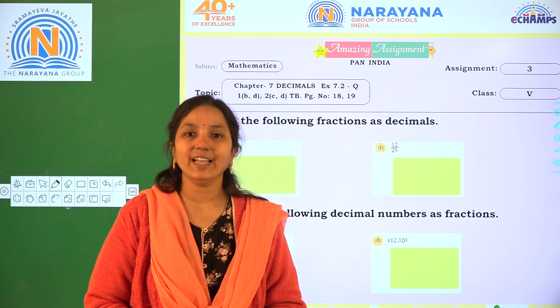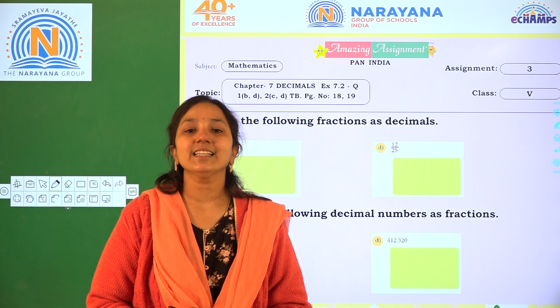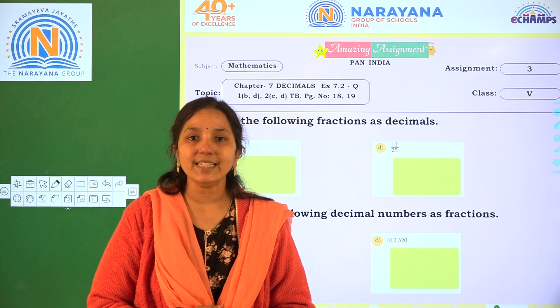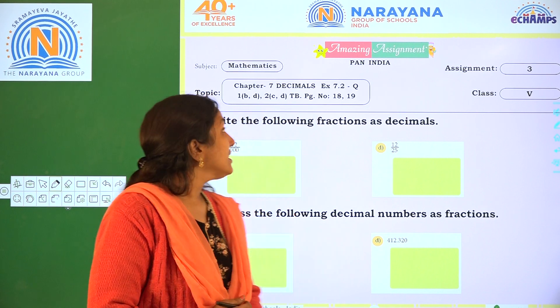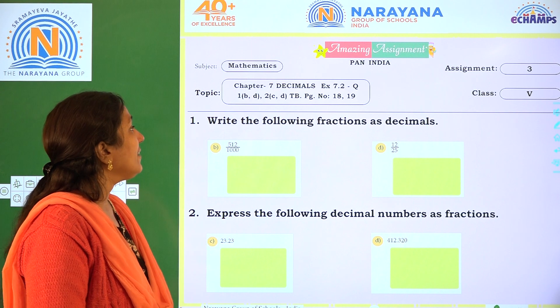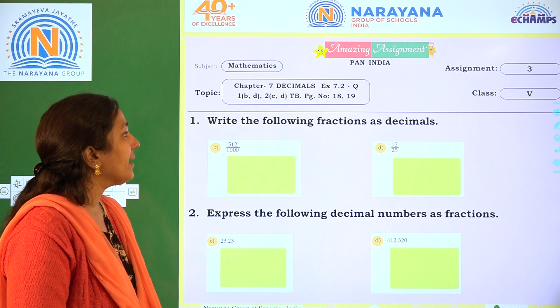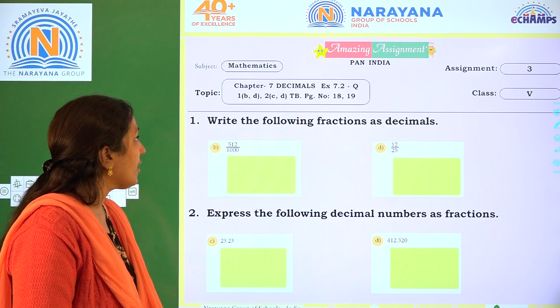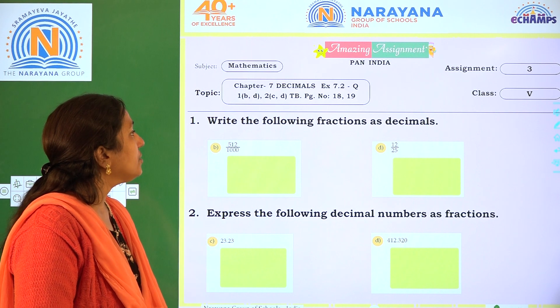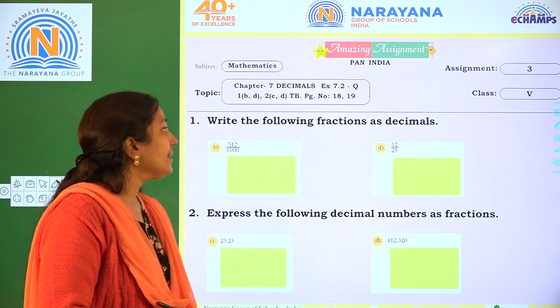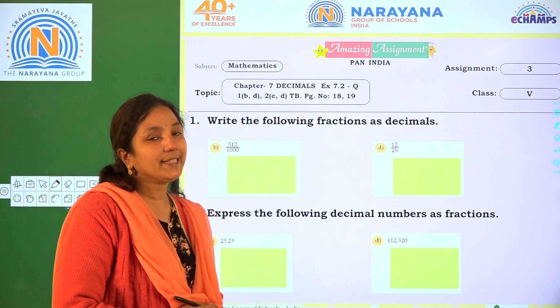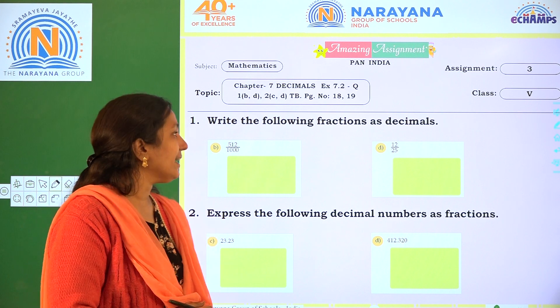Hi children, welcome to Narayana live classes. Today our assignment is chapter 7, Decimals, exercise 7.2, question number 1 BD and 2 CD. You can take your textbook at page numbers 18 and 19.